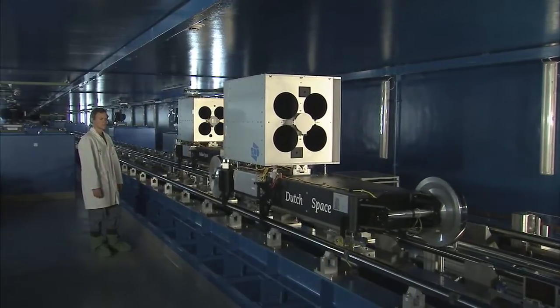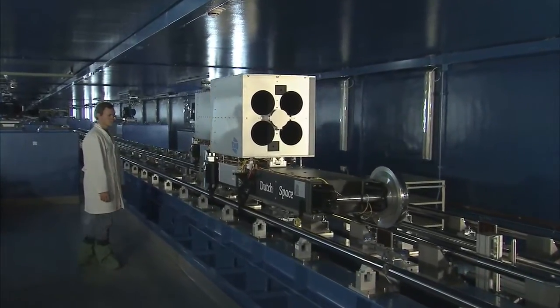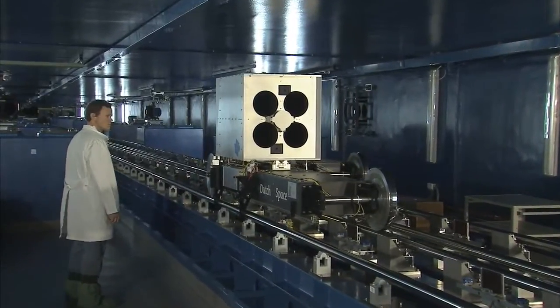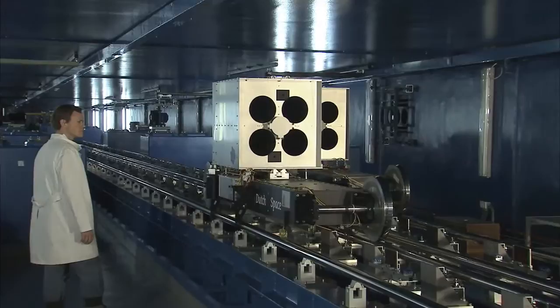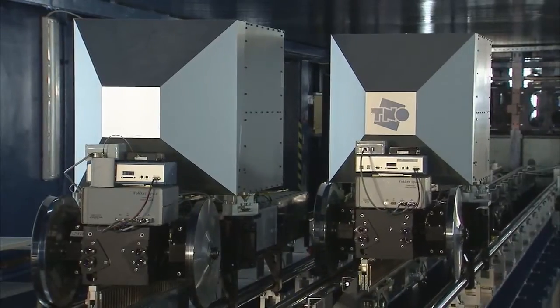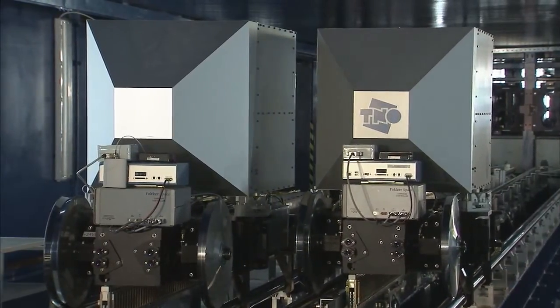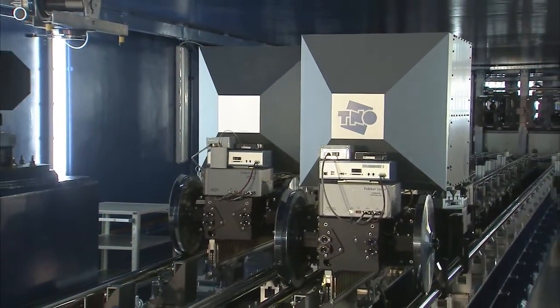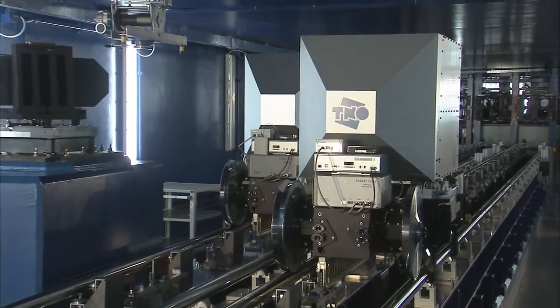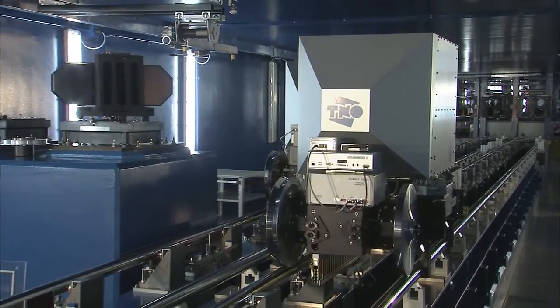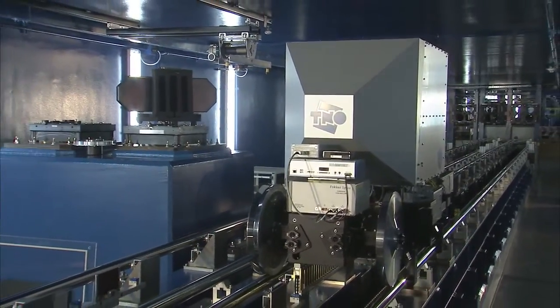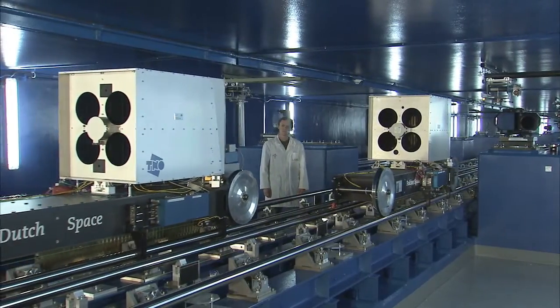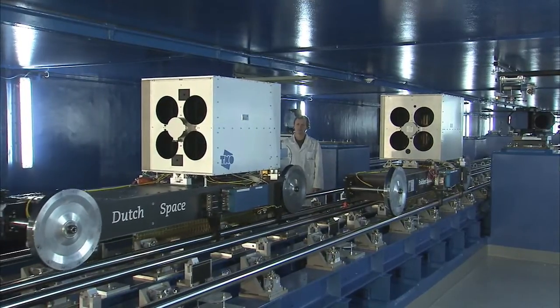Delay lines are an integral part of the VLT interferometer's complicated optical system. They ensure that the light beams arrive simultaneously at the common focus. To achieve this, several movable carriages loaded with ultra-smooth mirrors constantly adjust the light beams with extreme precision. The light paths must be kept equal to distances less than one thousandth of a millimeter over a distance of 100 meters. Without this kind of accuracy, the light cannot be analyzed properly by the observatory's instruments.